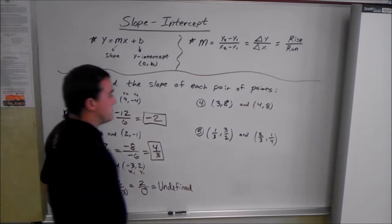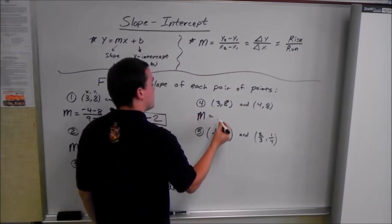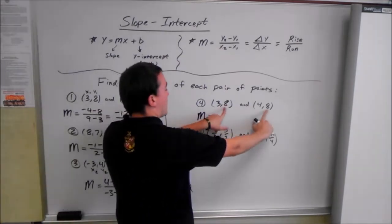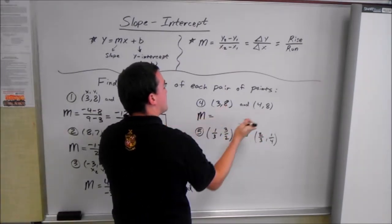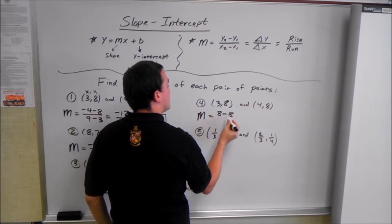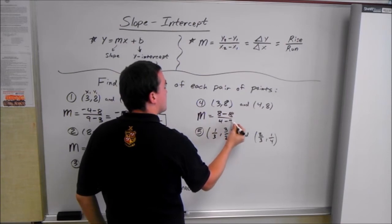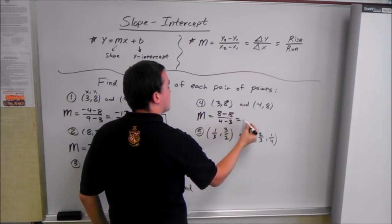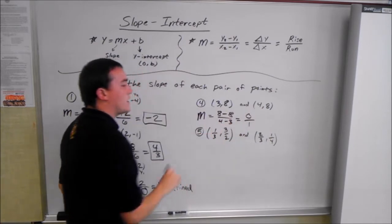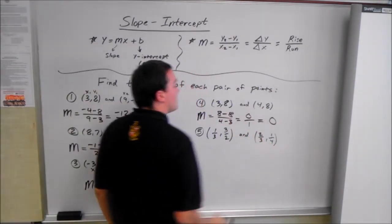Next example. m equals change in y's over the change in x's. We just look at our y's: 8 minus 8 is 0, over 4 minus 3. So we get 0 over 1, and 0 divided by any number is just 0. So the slope is 0.